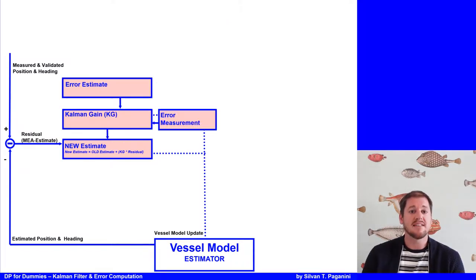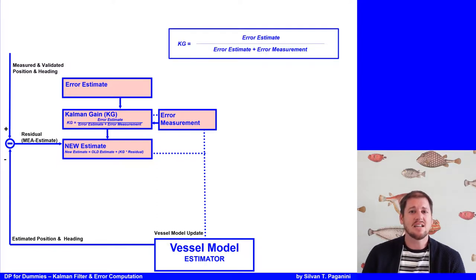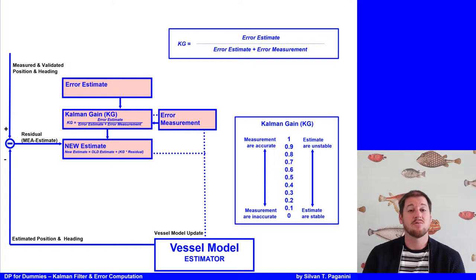The Kalman gain is calculated based on the error in the measurement and the error in the estimate. So the Kalman gain is equal to the ratio from the errors in the estimate divided to the sum of the error in the estimate plus the error in the measurements. And the numbers you get are always something between 0 and 1. If the Kalman gain is large, close to 1, that means the measurements we are getting are very accurate while the estimates are unstable. The error and the uncertainties in the estimates are large. And of course vice versa, if Kalman gain is close to 0, the estimates are stable and the measurements are inaccurate.